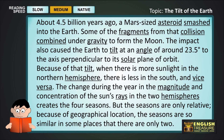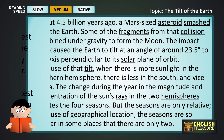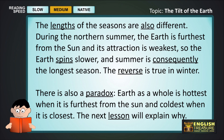But the seasons are only relative, because of geographical location. The seasons are so similar in some places that there are only two. The lengths of the seasons are also different. During the northern summer, the earth is furthest from the sun, and its attraction weakest. So the earth spins slower, and summer is consequently the longest season.